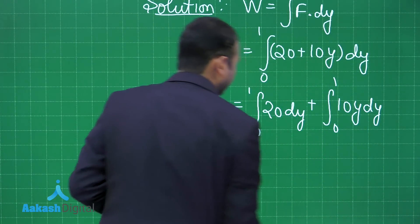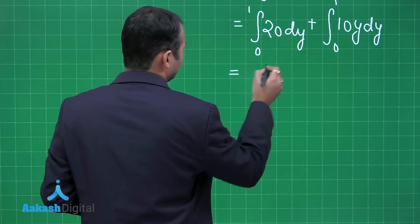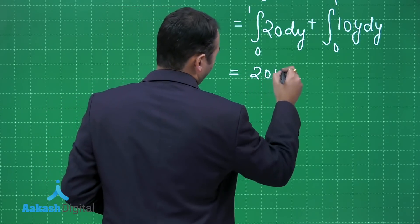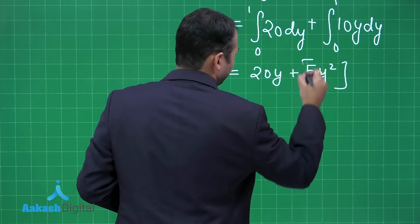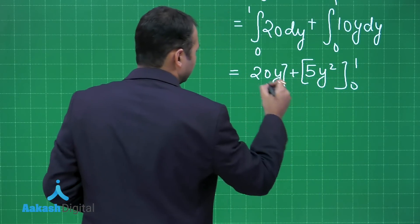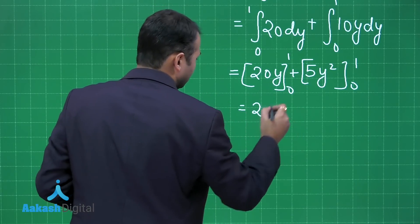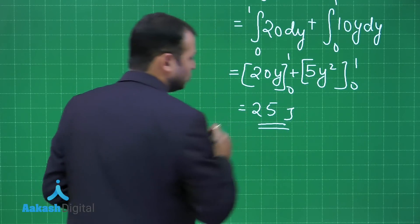Solving this you will get equals to 20y plus 5y square, with variation 0 to 1. This variation should also be 0 to 1. Solving this you will get 25 joules.